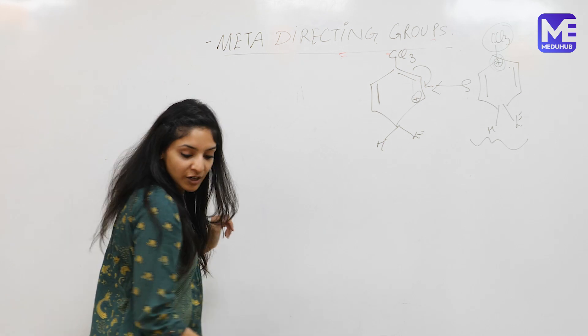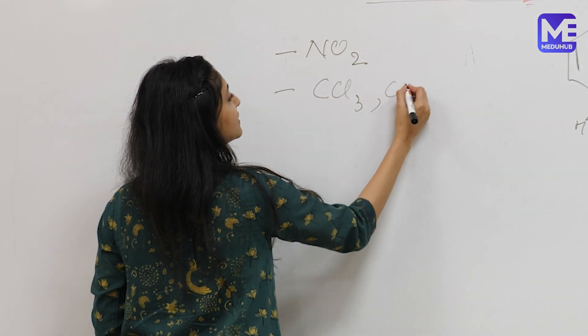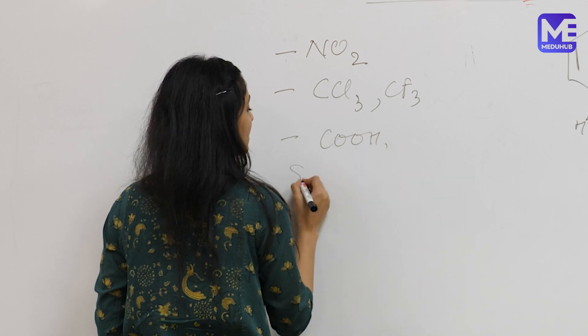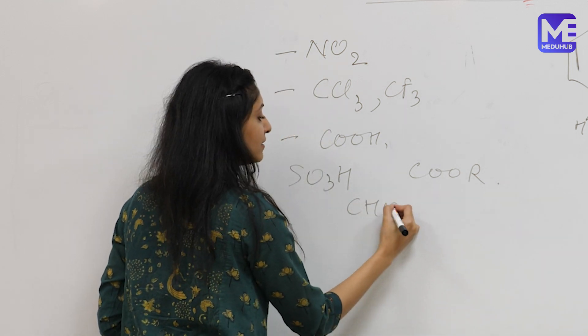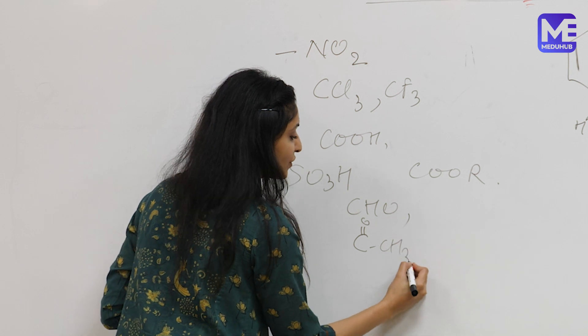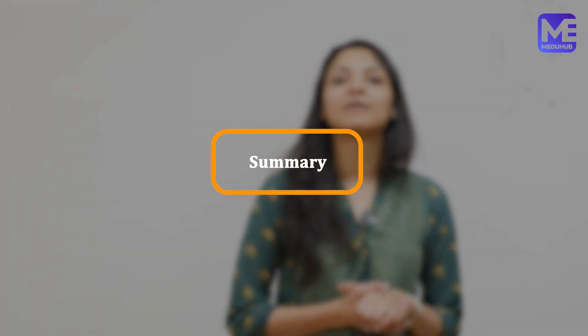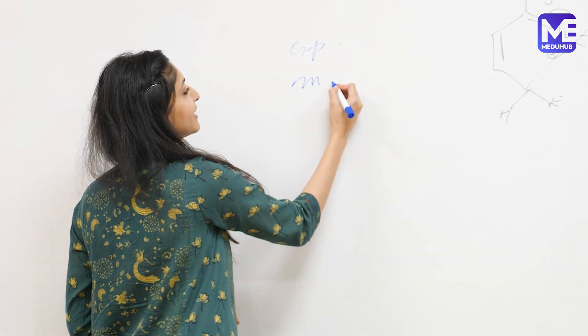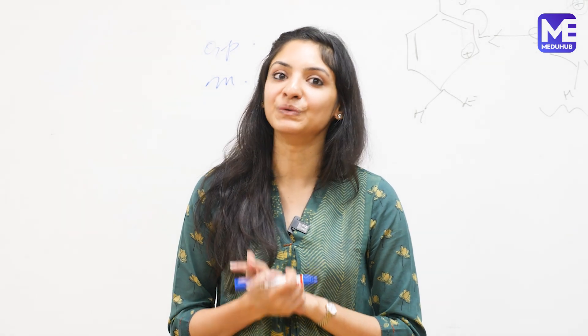Some other meta-directing and deactivating groups include: NO2, CCl3, CF3, carboxylic acid group, sulfonic acid group, ester, aldehyde, ketone group (COCH3), and others. All these are meta-directing groups and they deactivate the ring towards further electrophilic substitution reactions. Today we spoke about the effect of substituents in electrophilic substitution reactions in derivatives of benzene — ortho/para directing groups and meta-directing groups, and how they impact the rate of the reaction. If you have any doubts, write to us in the comment section and we will get back to you. Till then, bye-bye.